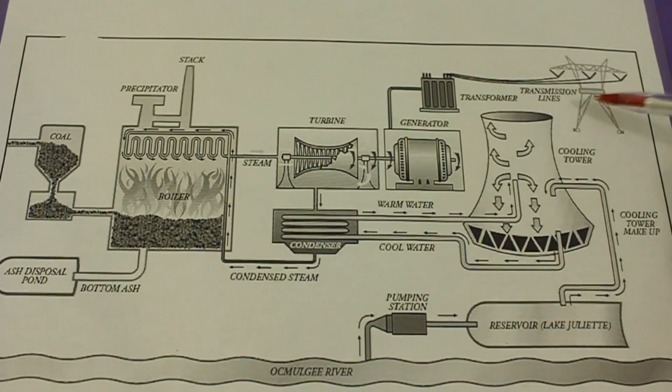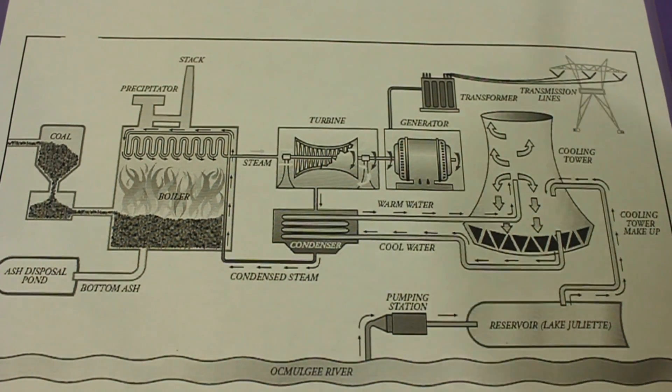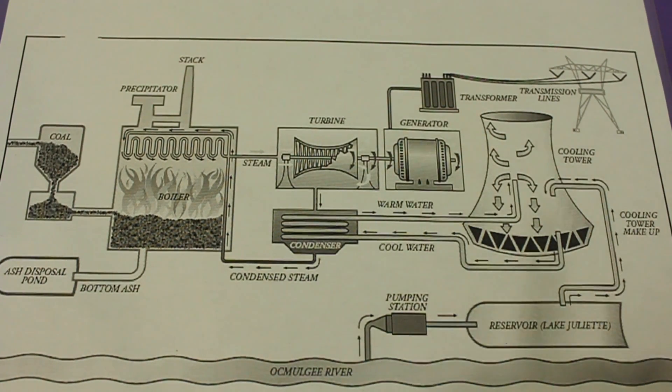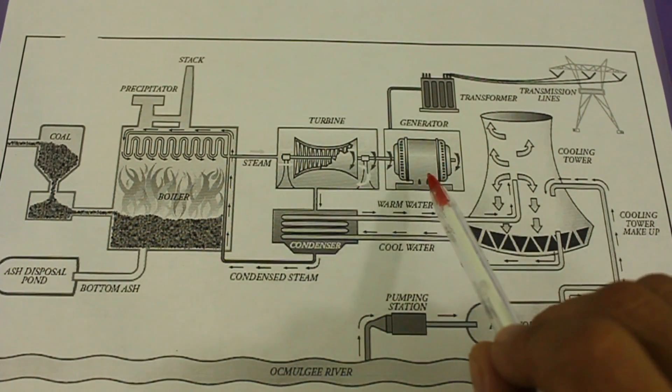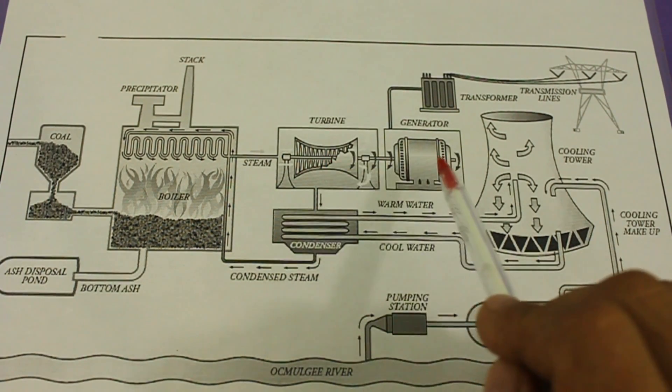You need high voltage in the transmission lines to reduce the losses of electric power. And the third component is the turbine that moves the generator.